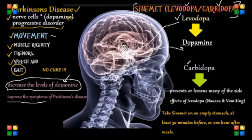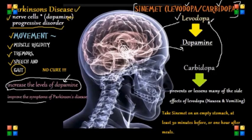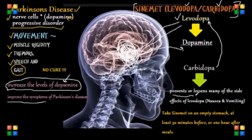Carbidopa has two benefits. First, it aids levodopa in crossing the blood-brain barrier for a greater CNS effect. Second, it works by preventing levodopa from being broken down before it reaches the brain, which causes less nausea and vomiting — a symptom patients on levodopa would otherwise experience.